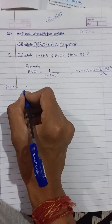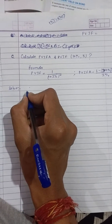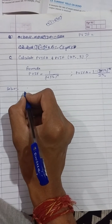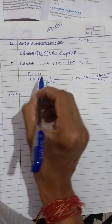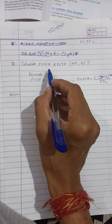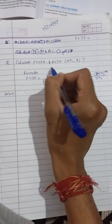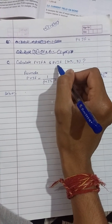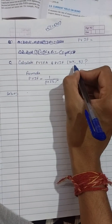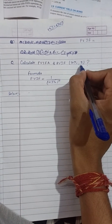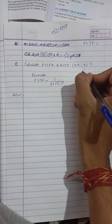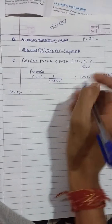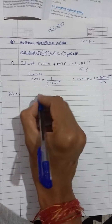Hello guys, today I will tell you about Present Value Interest Factor (PVIF) and Present Value Interest Factor Annuity (PVIFA) calculation. Here is the question: we have to calculate the PVIF and PVIFA at a rate of interest and a period of 3. These are the formulas.